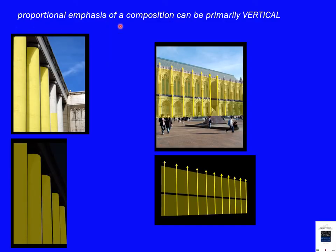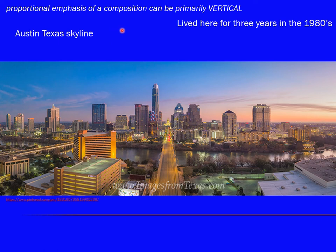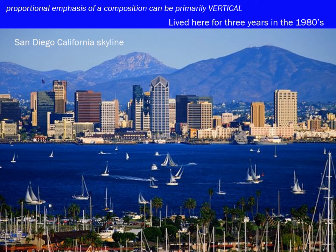The proportional emphasis of a composition can also be primarily vertical, in both architecture and urban design. This is visible in the cityscapes of Austin, Texas, where even in the 1980s the downtown had a vertical emphasis, and in downtown San Diego and San Francisco, where the vertical scale of buildings defines the urban environment.